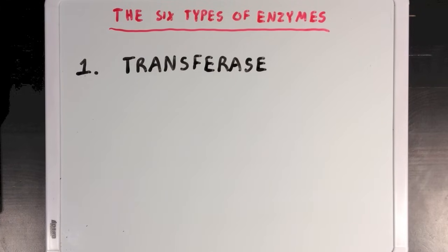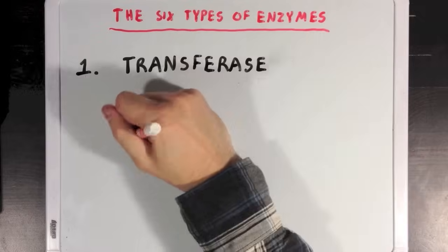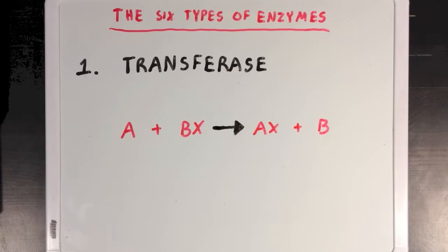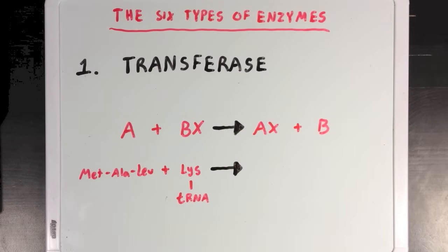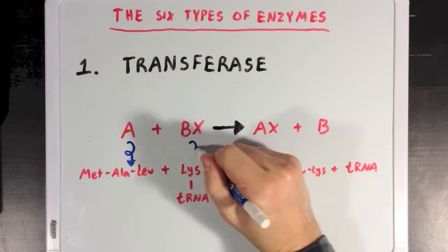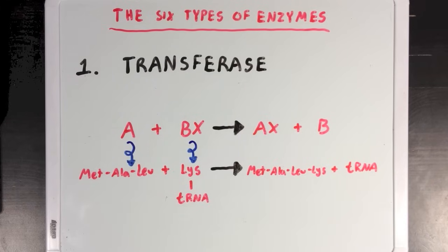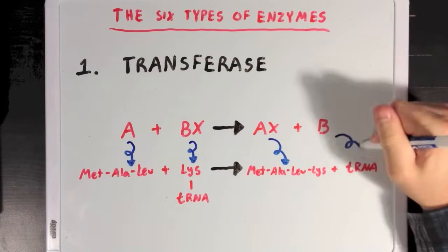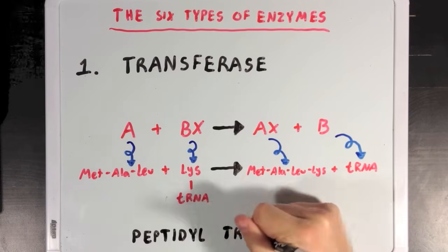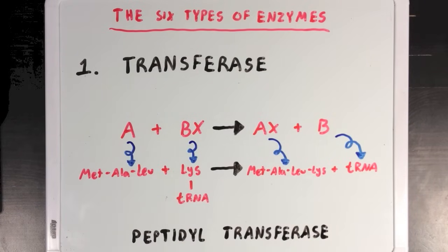And the basic reaction that transferases catalyze are ones where you move some functional group X from molecule B to molecule A. And a great example of one of these reactions occurs during protein translation, where amino acids bound to tRNA molecules are transferred over to the growing polypeptide chain. So, in this case, A refers to our amino acid chain, B refers to our tRNA, and X refers to this lysine residue which is being transferred from B to A. And this reaction in particular is catalyzed by an enzyme called peptidyl transferase, which is an appropriate name since it is a transferase involved in making peptides.